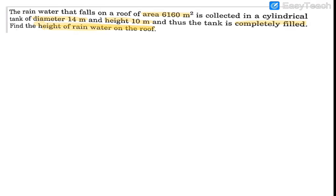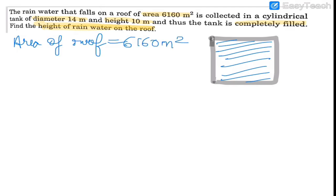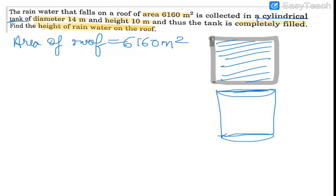We need to find the height of the rain water collected on the roof. First, let's draw the roof on which the rain water is collected. The area of the roof is 6160 meter square. This rain water is collected in a cylindrical tank whose diameter is 14 meter and height is 10 meter.